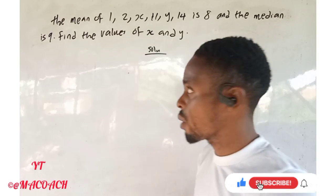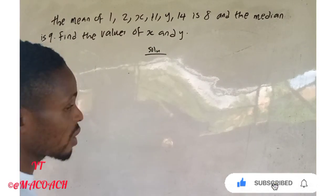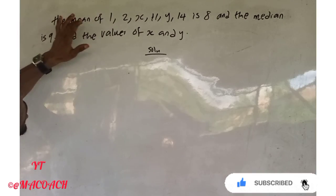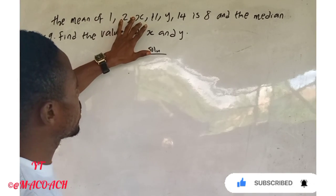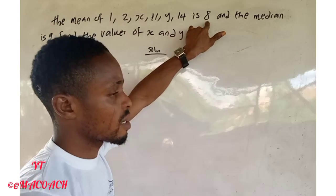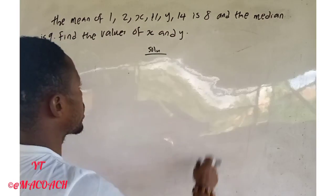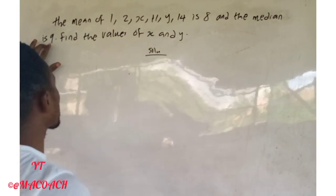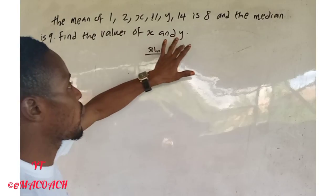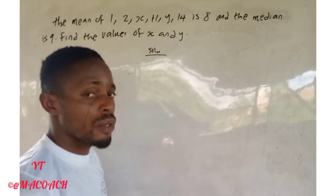The question states that the mean of 1, 2, s, 11, y, 14 is eight, and the median is nine. Find the value of s and y.